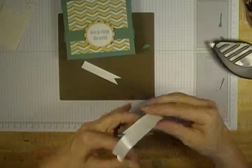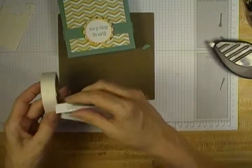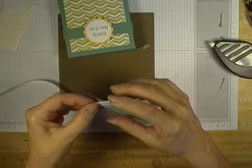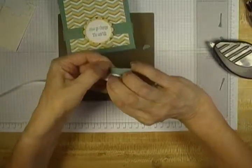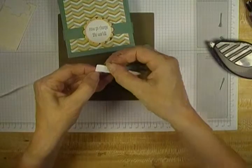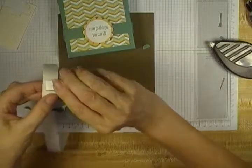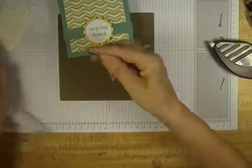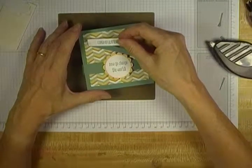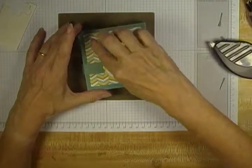And then with my glue dots, I'm just going to stick the two pieces together, slightly offset. Like that. And then another glue dot onto my box, just like that.